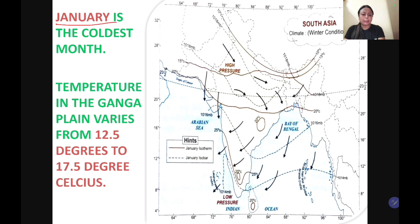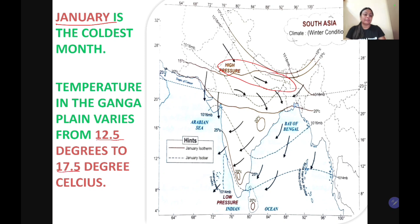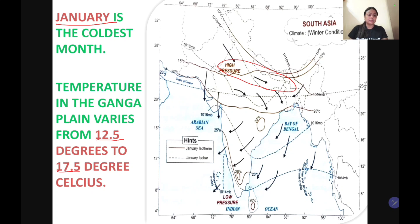In the Ganga Plains, the average temperature varies from 12.5 to 17.5 degree Celsius. The temperature varies from place to place, but the average is 12.5 to 17.5 degree Celsius.